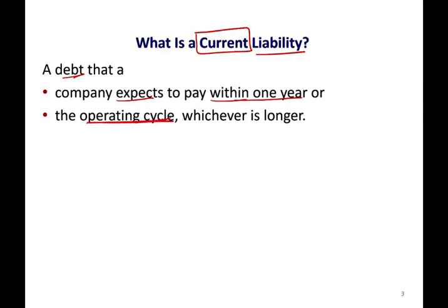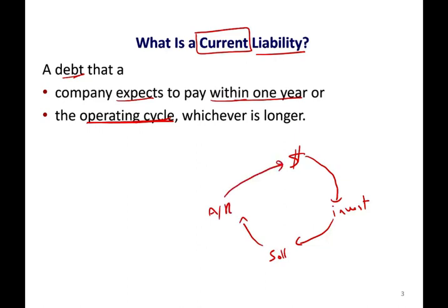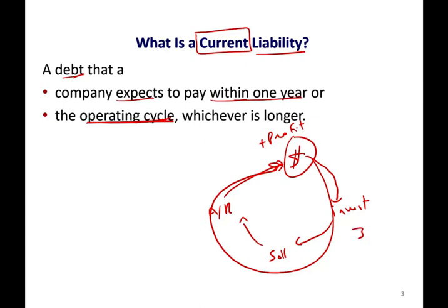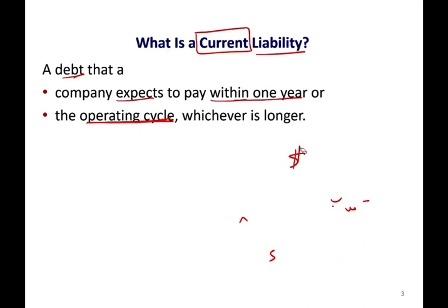What do we mean by the operating cycle? The operating cycle is how long it takes you to take some cash, invest it in something like inventory, sell the inventory, create a receivable, and collect the cash again — with profit, obviously. For some companies it may take three months, for others six months. If it's less than a year, we assume your operating cycle is a year. So for financial accounting purposes, we always assume your operating cycle is a year.